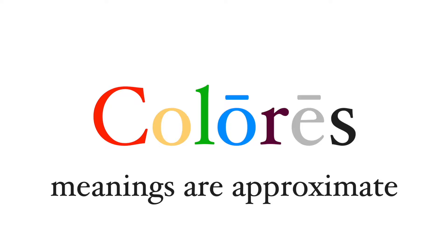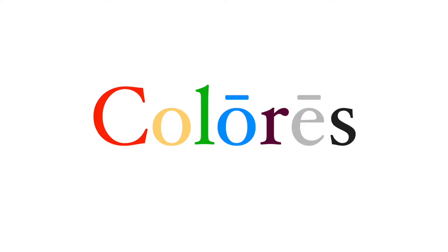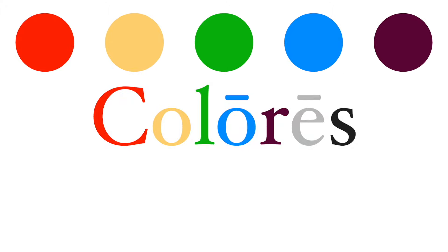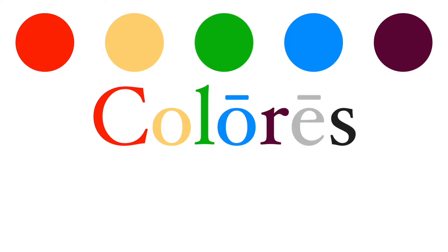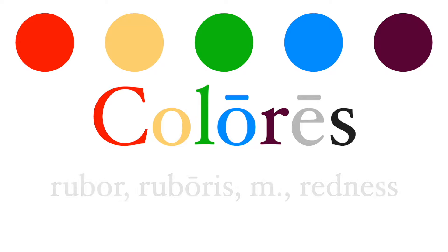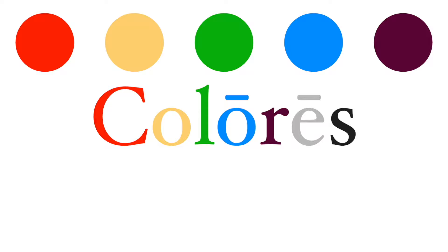In Latin we can divide up the colors into four, maybe five distinct groups: red, yellow, green, blue, and purple — I'll touch upon that at the end. It's important to note that colors are adjectives, and while there are nouns representative of color, like the noun 'rubor' meaning redness, I'm going to focus just on adjectives here. Later this week I'll have a companion video describing these colors in Latin, so be sure to check that out.